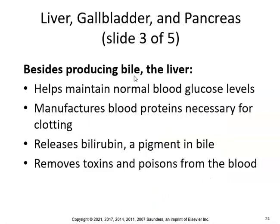Besides producing bile, the liver helps maintain normal blood glucose levels, manufactures blood proteins necessary for clotting, releases bilirubin — which is a pigment in bile — and removes toxins and poisons from the blood.